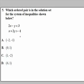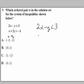Number 5: which ordered pair is in the solution set for the system of inequalities shown below? For this one, simply plug in the points. In order for a point to be a solution to this system, it must be true in both inequalities. Let's do the first answer choice: x equals negative 2 and y equals negative 1. Take those values and plug them into the first inequality — everywhere you see x substitute negative 2, and everywhere you see y substitute negative 1.